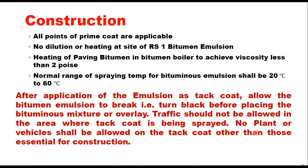The other points discussed for prime coat also apply to tack coat. There will be no dilution or heating at site of bitumen emulsion. Heating of paving bitumen in a bitumen boiler can be done to achieve viscosity less than two poise. The normal range of spraying temperature for bitumen emulsion is 20 to 60°C, as in case of prime coat. After application of the emulsion as tack coat, allow the bitumen emulsion to break — that is, to turn black — before placing the bitumen mixture or overlay. Traffic should not be allowed in the area where tack coat is being sprayed.